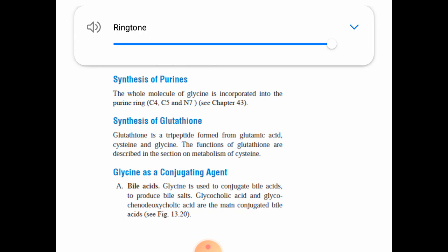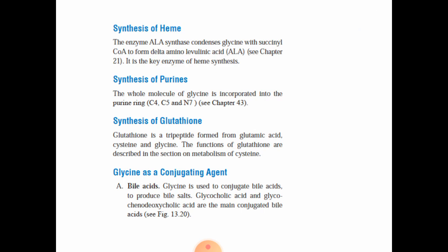Next is the synthesis of heme. The enzyme ALA synthase condenses glycine with succinyl-CoA to form delta-aminolevulinic acid (ALA). Next is the synthesis of purines — glycine is incorporated into the purine ring.